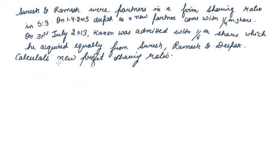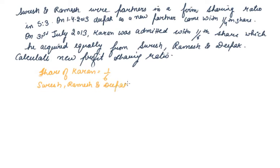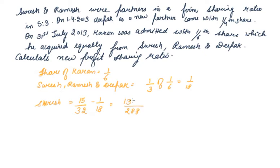You just have to see how the question guides you — it is simple mathematics. Karan's share is 1/6, acquired equally, so each of Suresh, Ramesh, and Deepak gives 1/3 of 1/6 = 1/18. Suresh's new share: 15/32 minus 1/18. Taking LCM as 288: 135/288 minus 16/288 = 119/288.